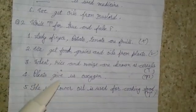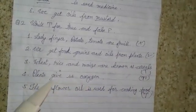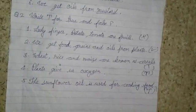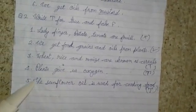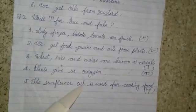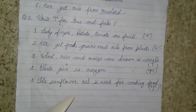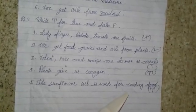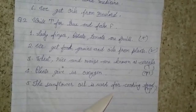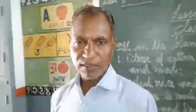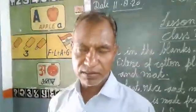Plants give us oxygen — this option is also true. The sunflower oil is used for cooking food — this option is also true. Thanks, thank you.